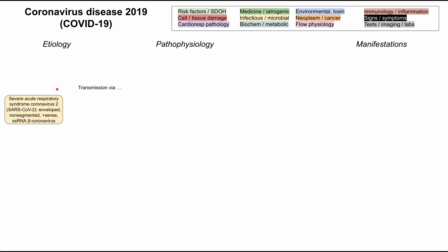It can be transmitted in a few different ways: via inhalation of droplets, inhalation of aerosol particles — which makes it an airborne transmission — and also via mucous membrane contact. For instance, if you touch someone that has the virus and then touch your mouth, your eyes, or pick your nose, you can transmit COVID that way as well.